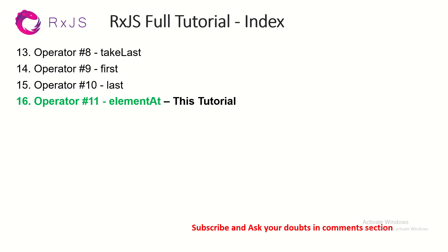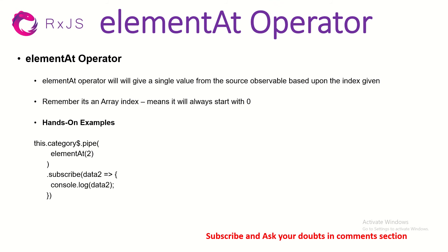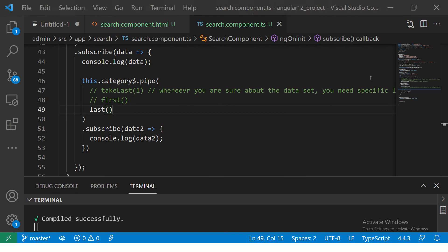Today is operator 11: elementAt. So what does the elementAt operator do? It will give us a single value from the source observable based on the index given. Like I said, if you want an element at position two, you can get it by passing that index. Remember, it's an array index, which means it always starts with zero. A lot of people get confused because other operators don't use zero-based indexing, but elementAt works like a standard array index starting at zero.